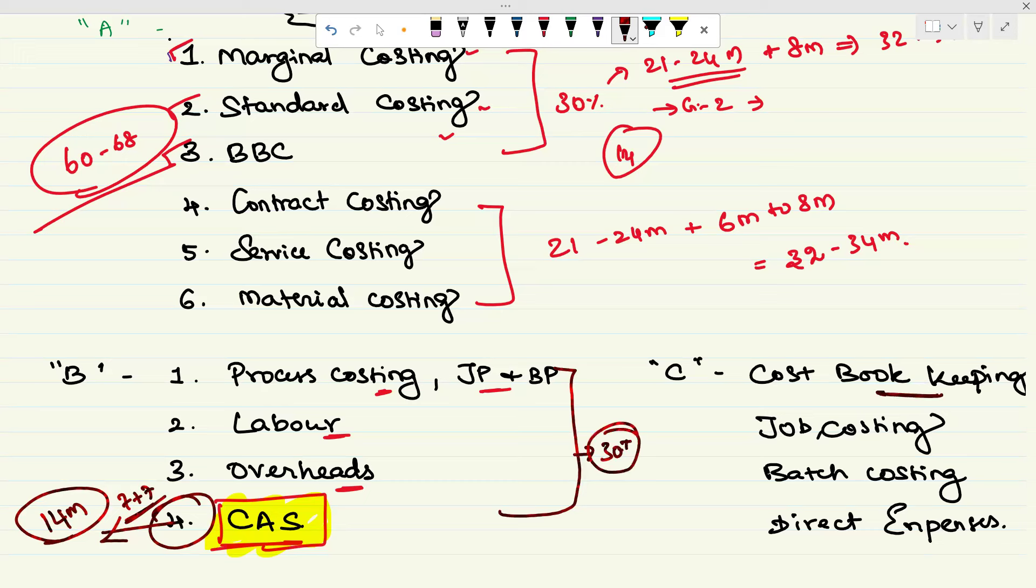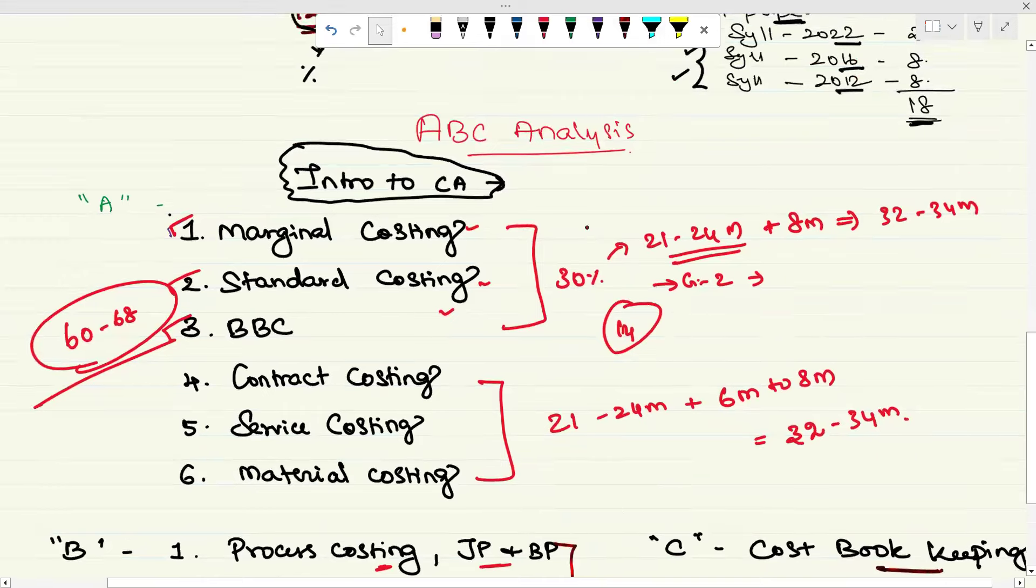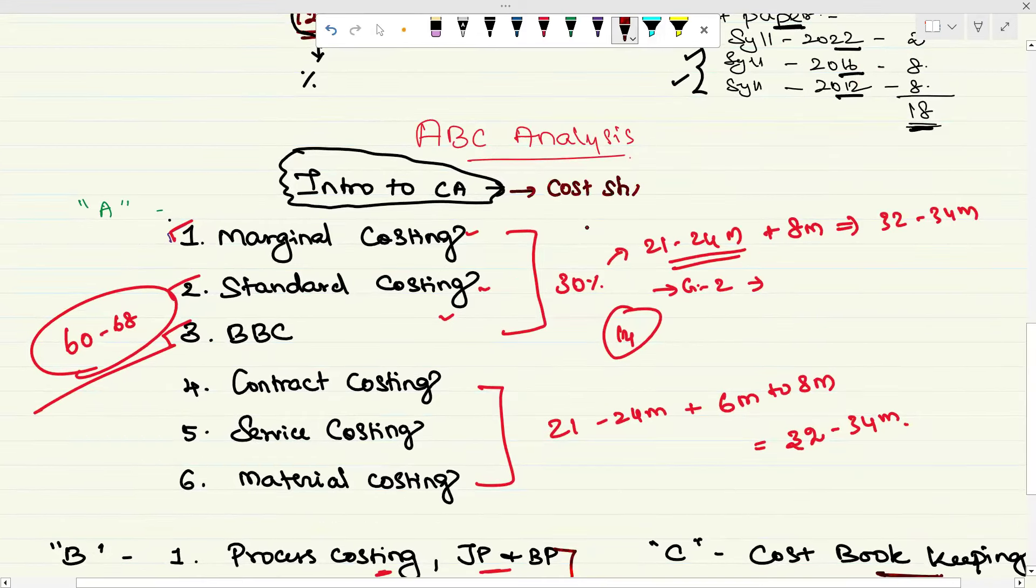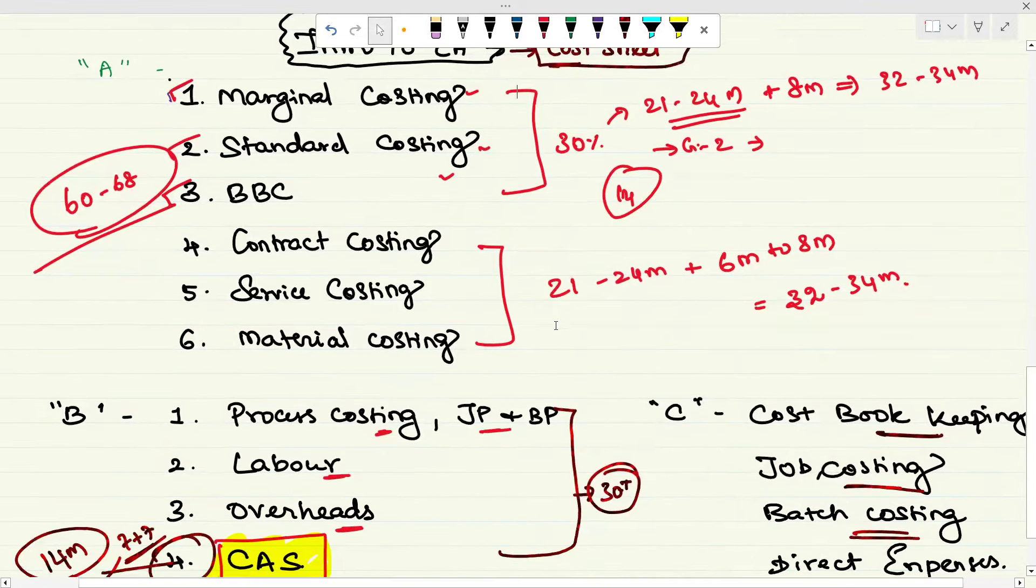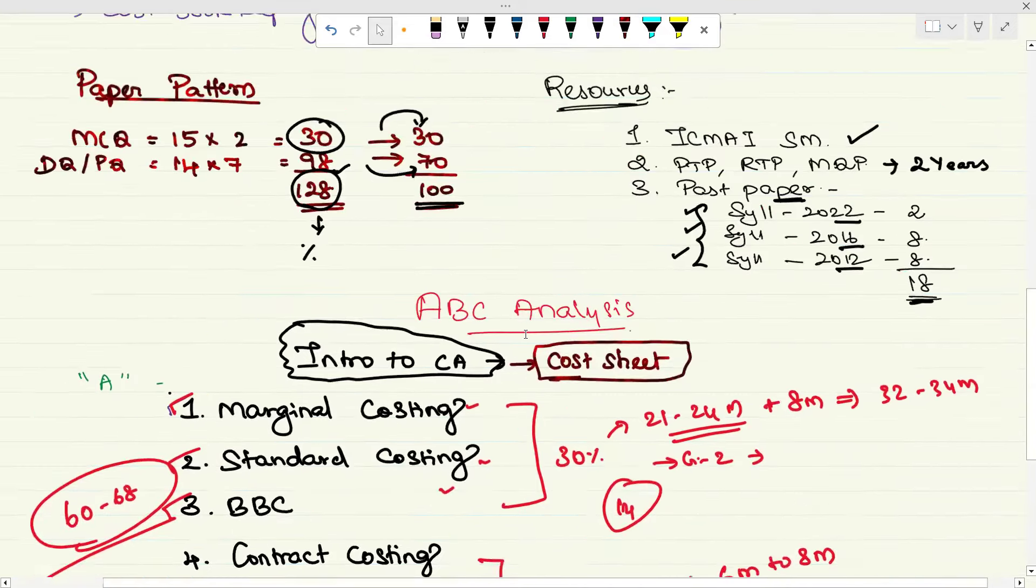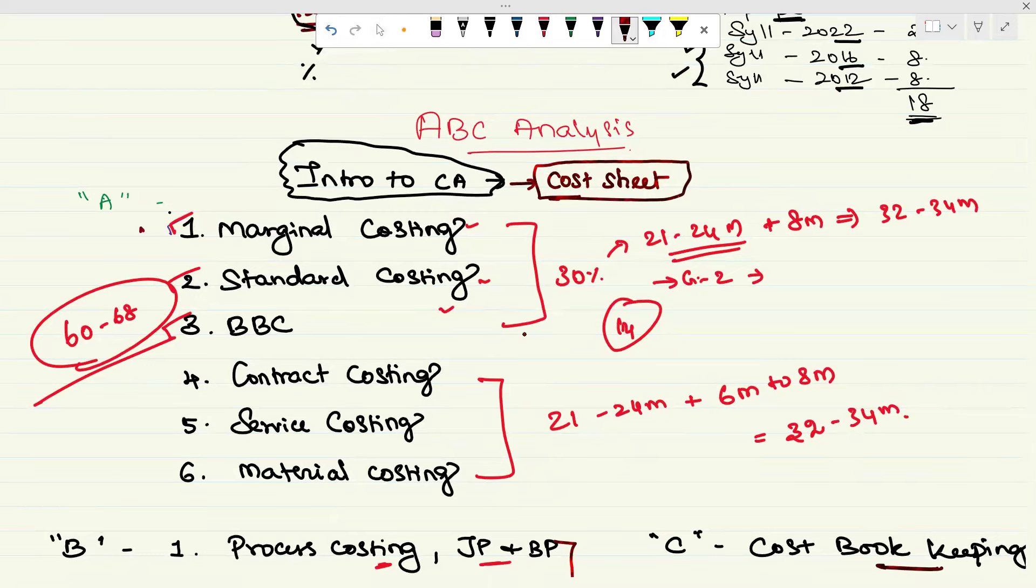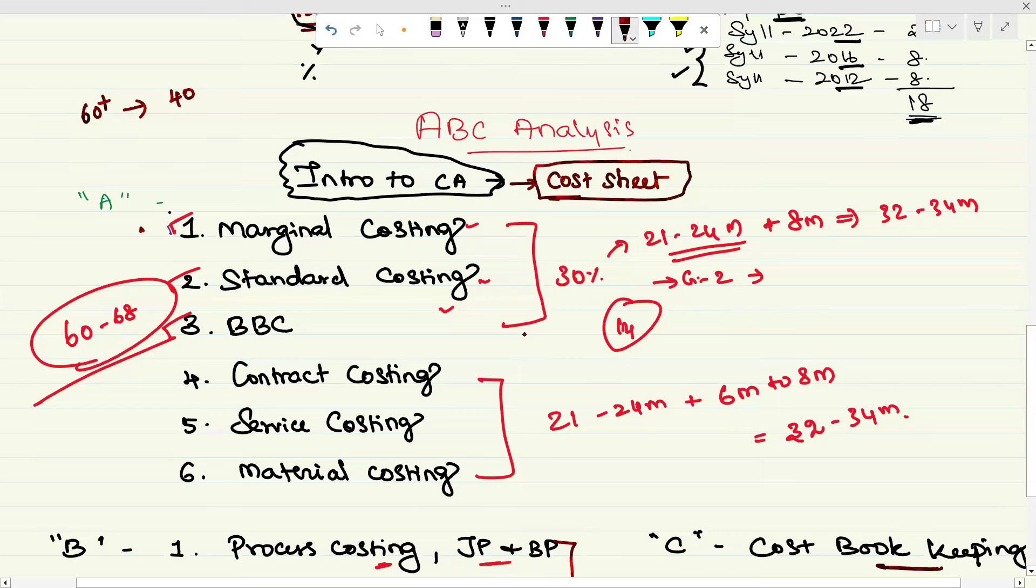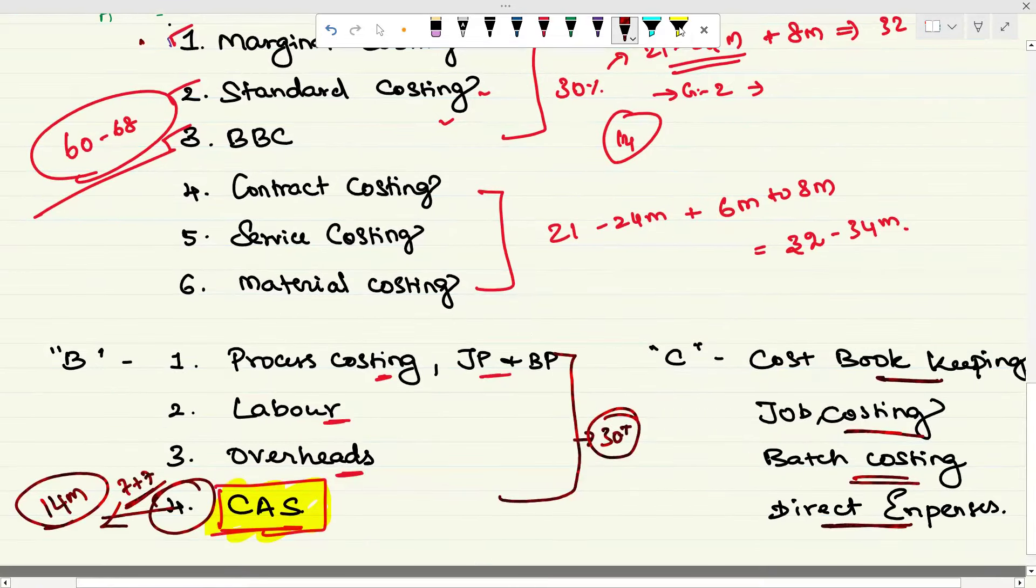Then come to C part, that is cost bookkeeping, job costing, batch costing, and direct expenses. You have never included cost sheet here? For my understanding, intro to CA is inclusive of cost sheet. If you follow this, if you focus on these six chapters first, you are guaranteed 60 plus marks. Try to score 50 plus or even 40 plus. Do B category, 30 plus, do 15 plus. Don't leave C category, study that C category with less preference.